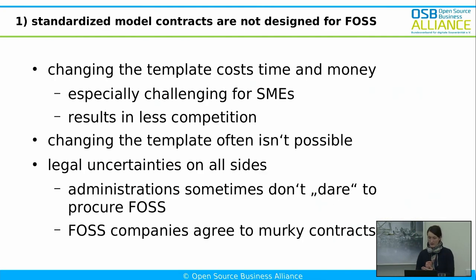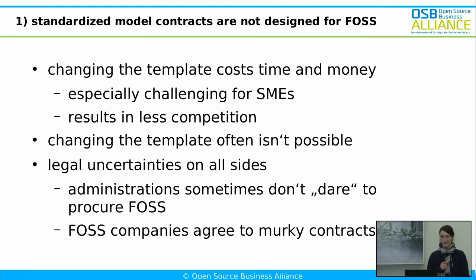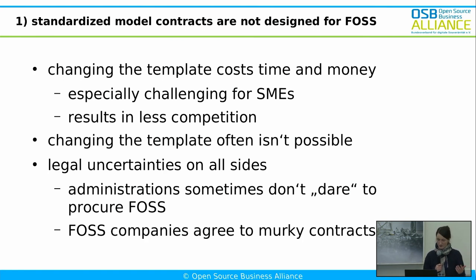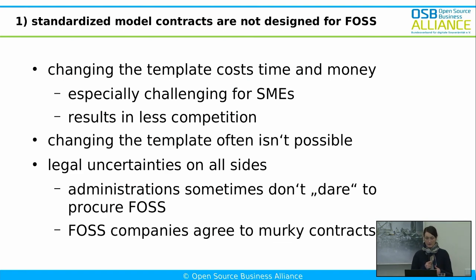These standardized model contracts are not designed with FOSS in mind, and that means you have to change them — which kind of defeats the purpose of a model contract. The idea of a model contract is that you don't have to come up with a contract from scratch; you just use the template, fill in everything, and you're done. But with open source, you have to actually adapt these templates, and that costs a lot of time and money. In the Open Source Business Alliance, a couple of years back, we published a guide on how to alter the different model contracts. But still, altering the templates takes a lot of time and money.